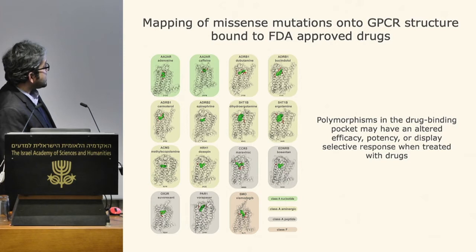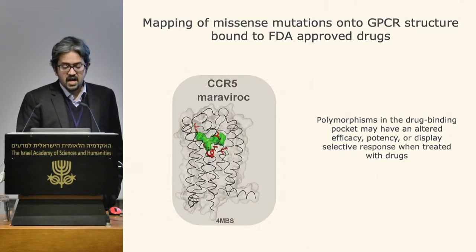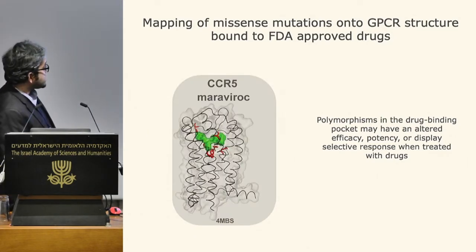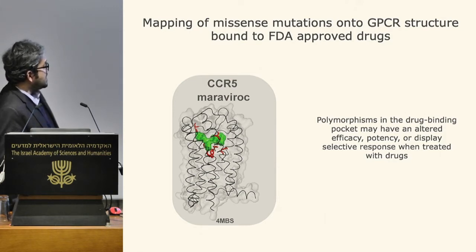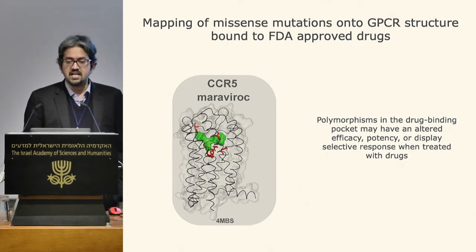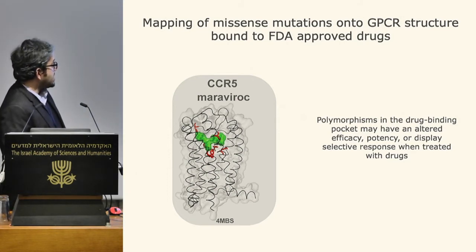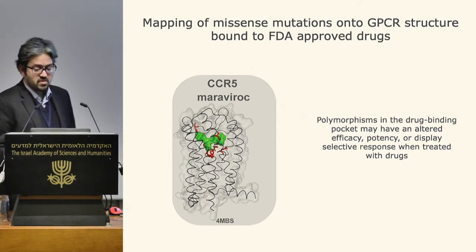For the CCR5 chemokine receptor, target of the FDA-approved drug Maraviroc, seven out of eight positions that directly contact the drug are highly polymorphic in the human population, suggesting these individuals are less likely to respond to Maraviroc treatment. These polymorphisms may result in altered drug response due to ineffective binding, altered receptor expression, or altered binding to effector molecules.